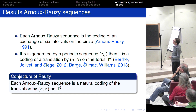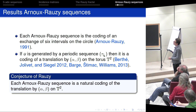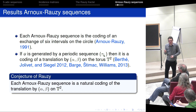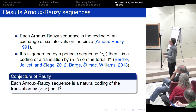Arnoux and Rauzy conjectured that again there are rotations on the two-torus. Each Arnoux-Rauzy sequence is the coding of an exchange of six intervals on the circle. Valérie, Olivier, and Siegel, and independently Bach, Stimatz, and Williams, showed that if the sequence is generated by a periodic sequence of substitutions — essentially the substitutive case — and each Arnoux-Rauzy substitution occurs at least once to guarantee the hyperbolicity property, then this dynamical system is conjugate to a translation of the torus.